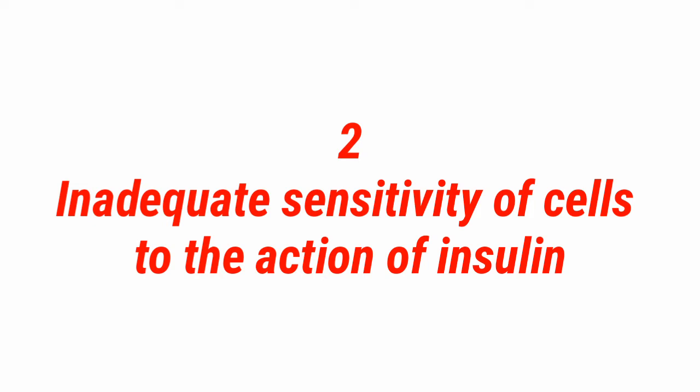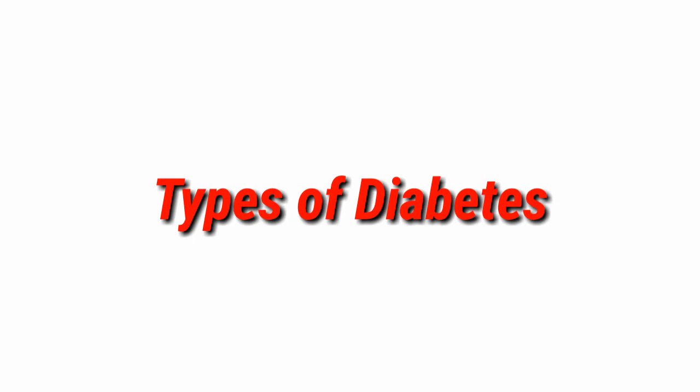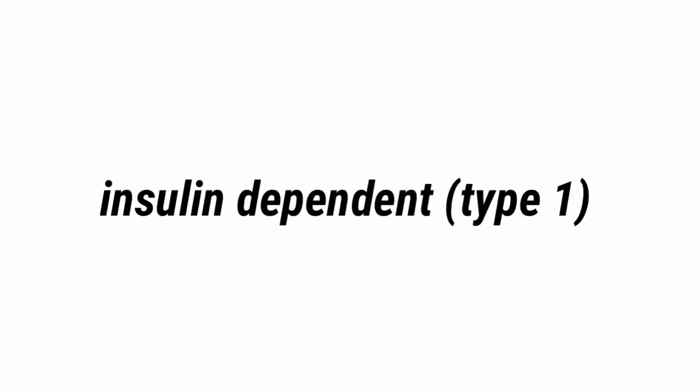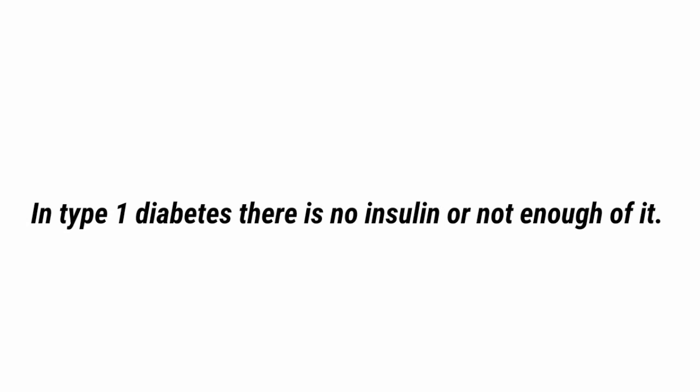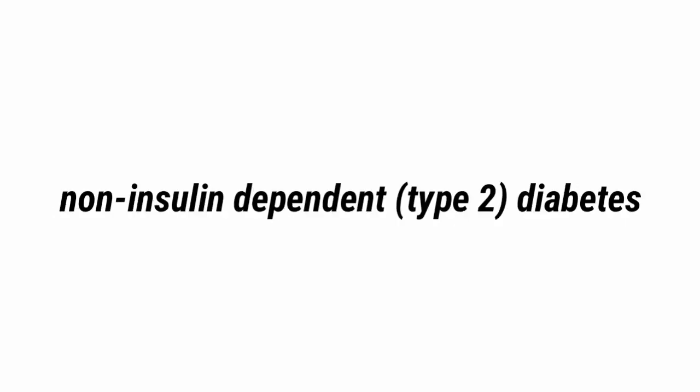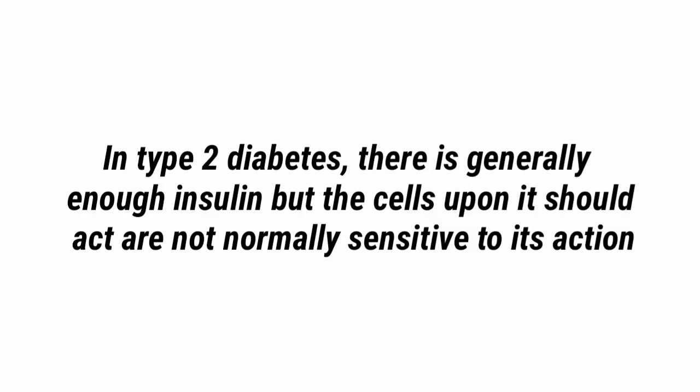There are two types of diabetes. The first is insulin-dependent diabetes, commonly called Type 1 diabetes, in which there is no insulin or not enough of it. The second is non-insulin-dependent diabetes, commonly called Type 2 diabetes, in which there is generally enough insulin but the cells are not normally sensitive to its actions.